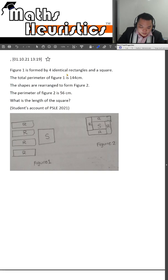Figure 1 is formed by 4 identical rectangles and a square. The total parameter of figure 1 is 144 cm. The shapes are rearranged to form figure 2 and the parameter of figure 2 is 56 cm. What is the length of the square?